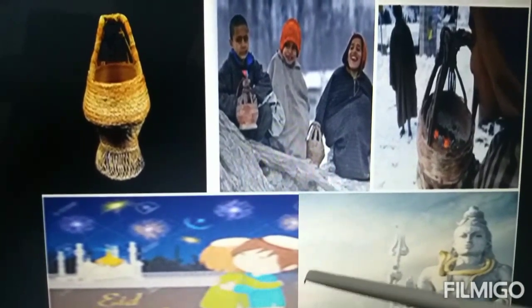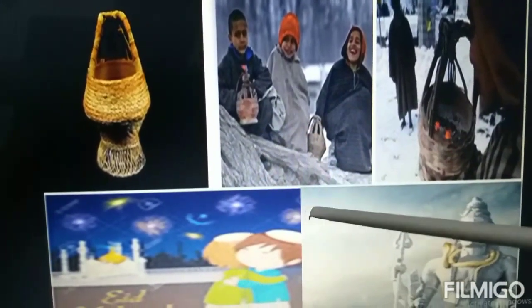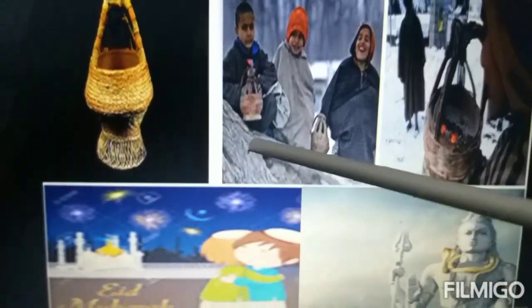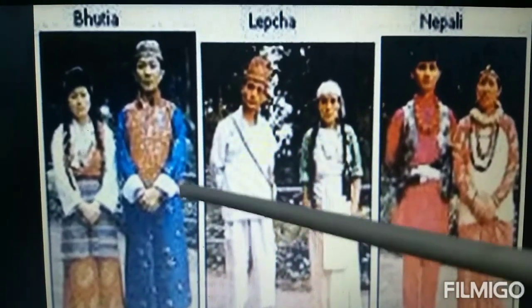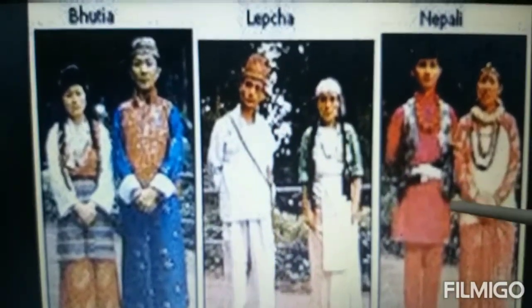Tourism is the main source of income in the Himadri region. The people of this region keep Kangri — a small pot with burning coal — to keep themselves warm. The main festivals celebrated here are Eid and Mahashivaratri. In Sikkim, people belong to three main tribes: Bhutia, Lepcha and Nepali.